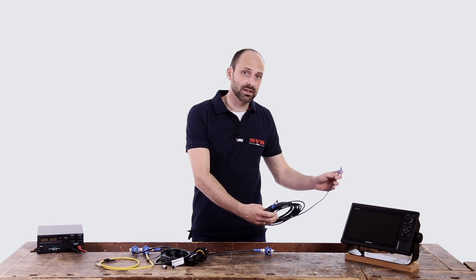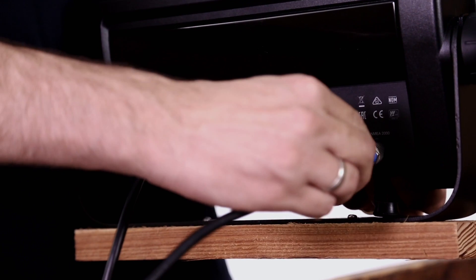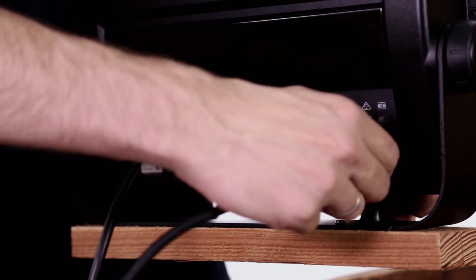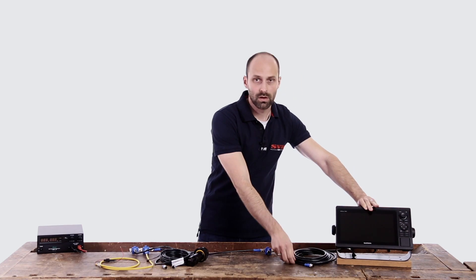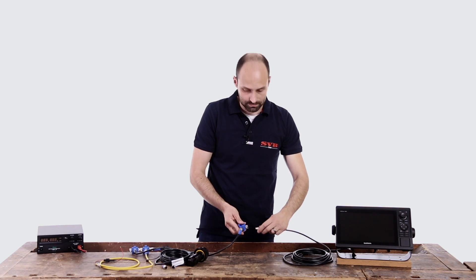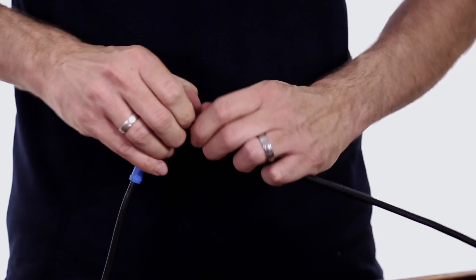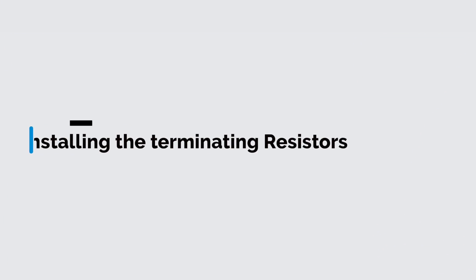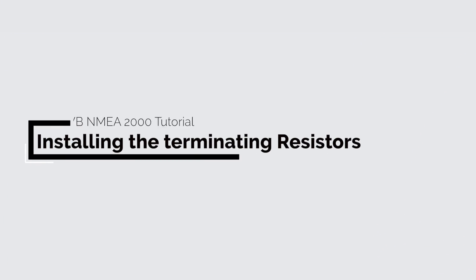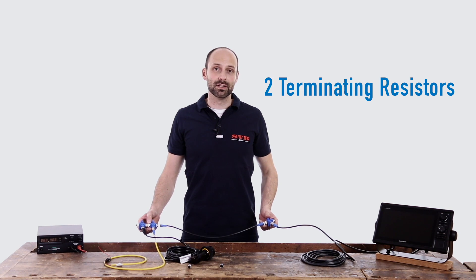Simply connect one end of the network cable to the chart plotter and the other end to a 3T piece in our backbone.